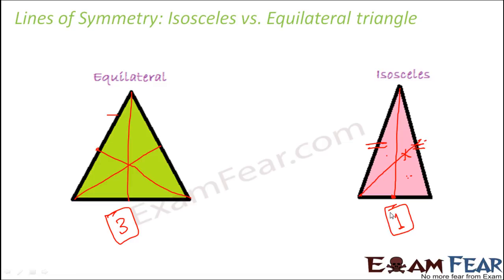Why is there a difference in the number of lines of symmetry? Because in an equilateral triangle all sides are equal, so it is a regular polygon and has multiple lines of symmetry. But in an isosceles triangle only two sides are equal, therefore you come across only one line which can divide it into two equal halves — so it has only one line of symmetry.